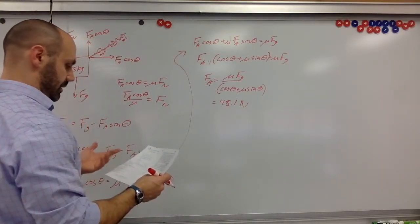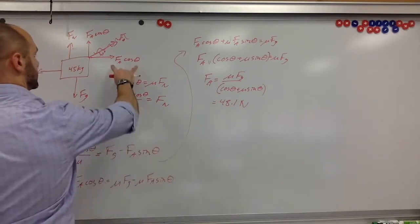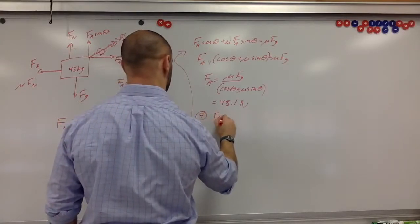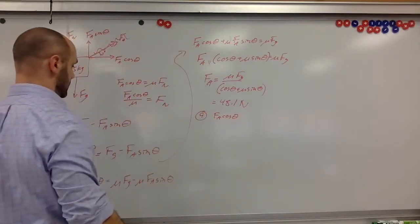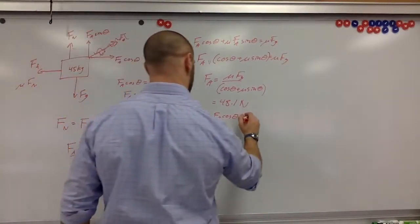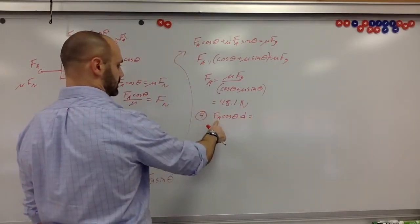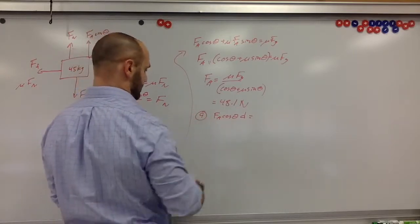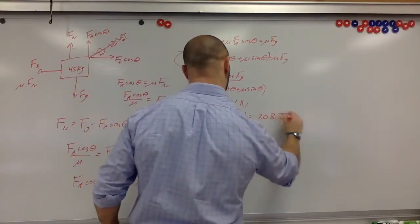Now we want to know how much work the man does pulling the sled. That's just FA cosθ times the displacement. The sled travels 5 meters, so: W = 48.1 × cos(30°) × 5 ≈ 208 joules.